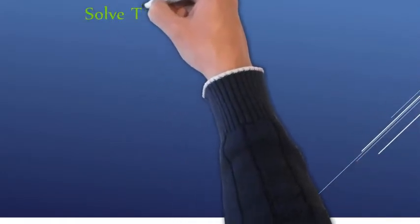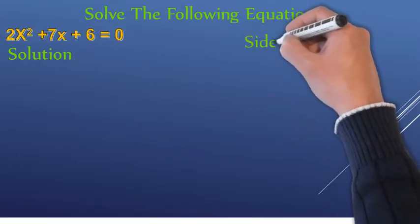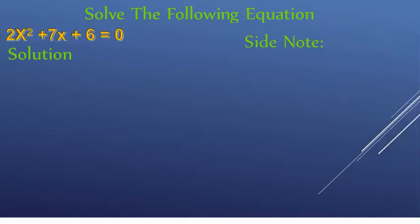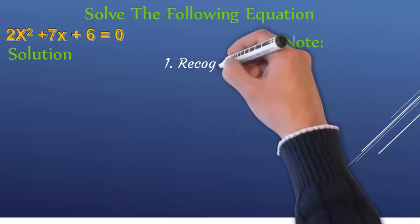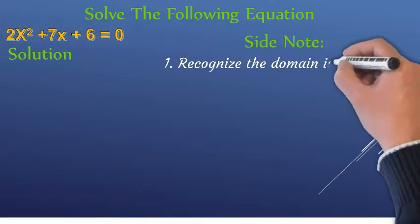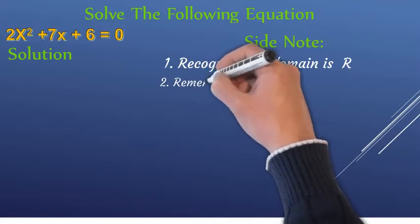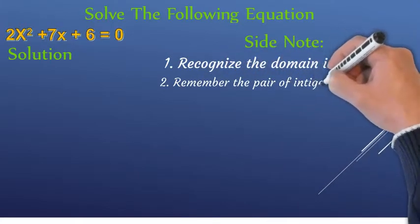Now let's go to the next example. We have to recognize that the domain is the real numbers. The x-square coefficient is the constant number 6, which gives 12. That means 12 factors.